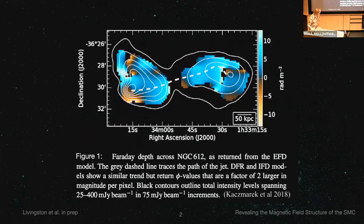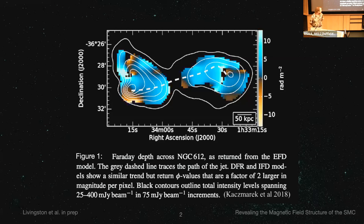I'd like to talk about why we study magnetic fields. Magnetic fields have comparable energies to gases and cosmic rays within galaxies. On large scales, they play an important role in the dynamics of clusters and galaxies, and on small scales, they're important in star formation and evolution of the interstellar medium. This figure is a Faraday depth map of a radio galaxy, forming quite complex structure with positive and negative pointing magnetic fields.